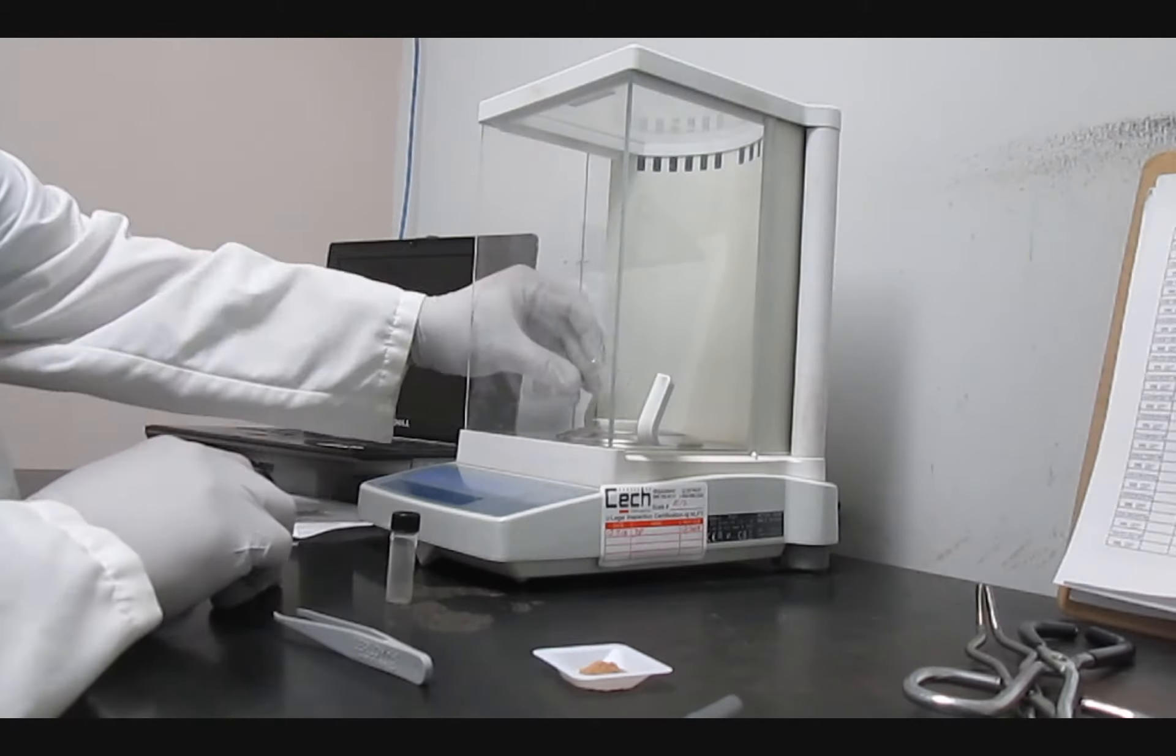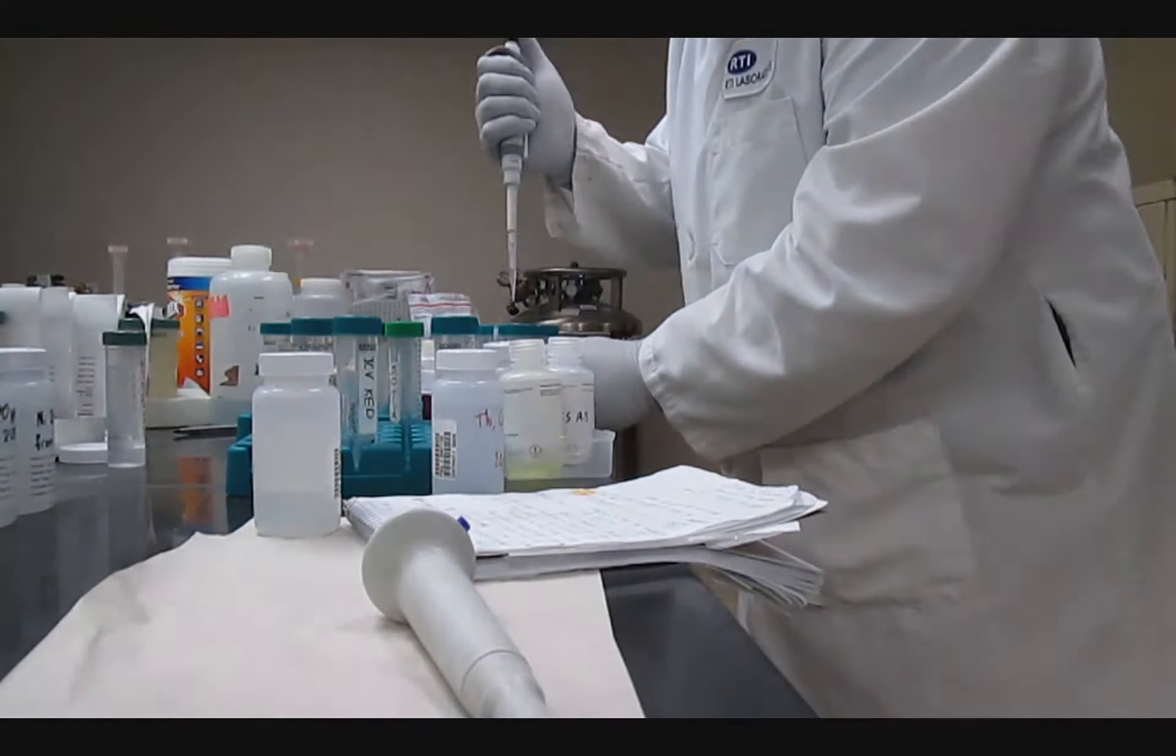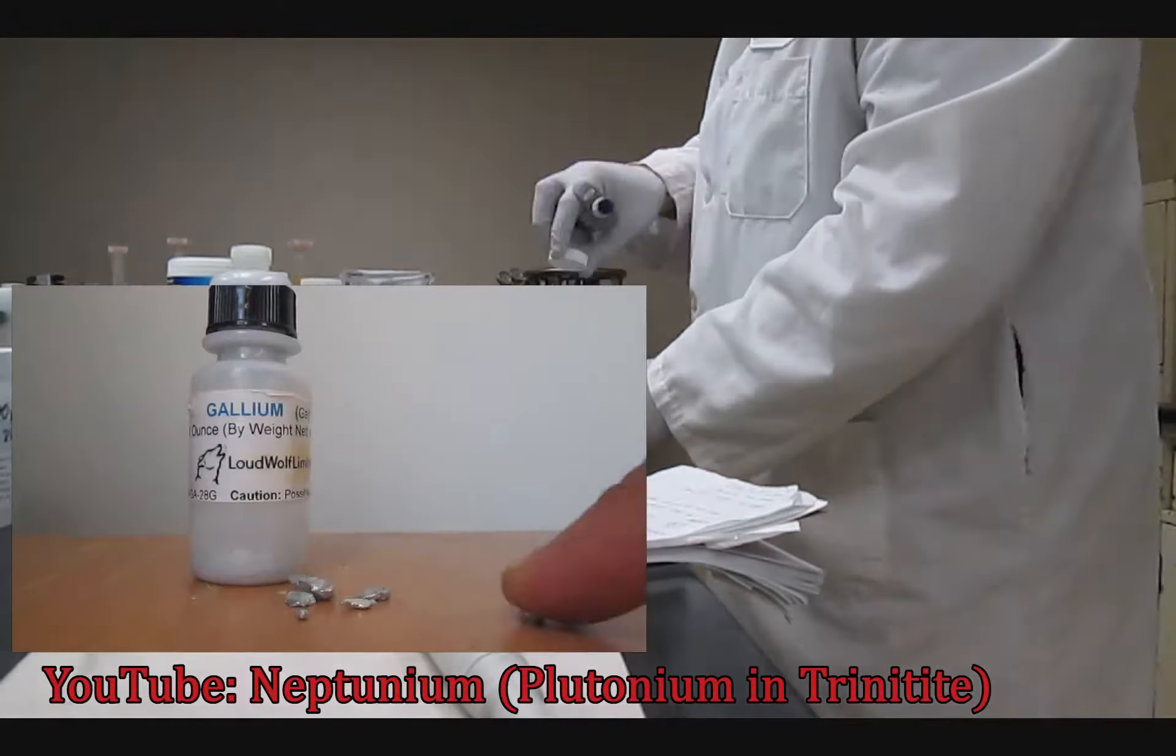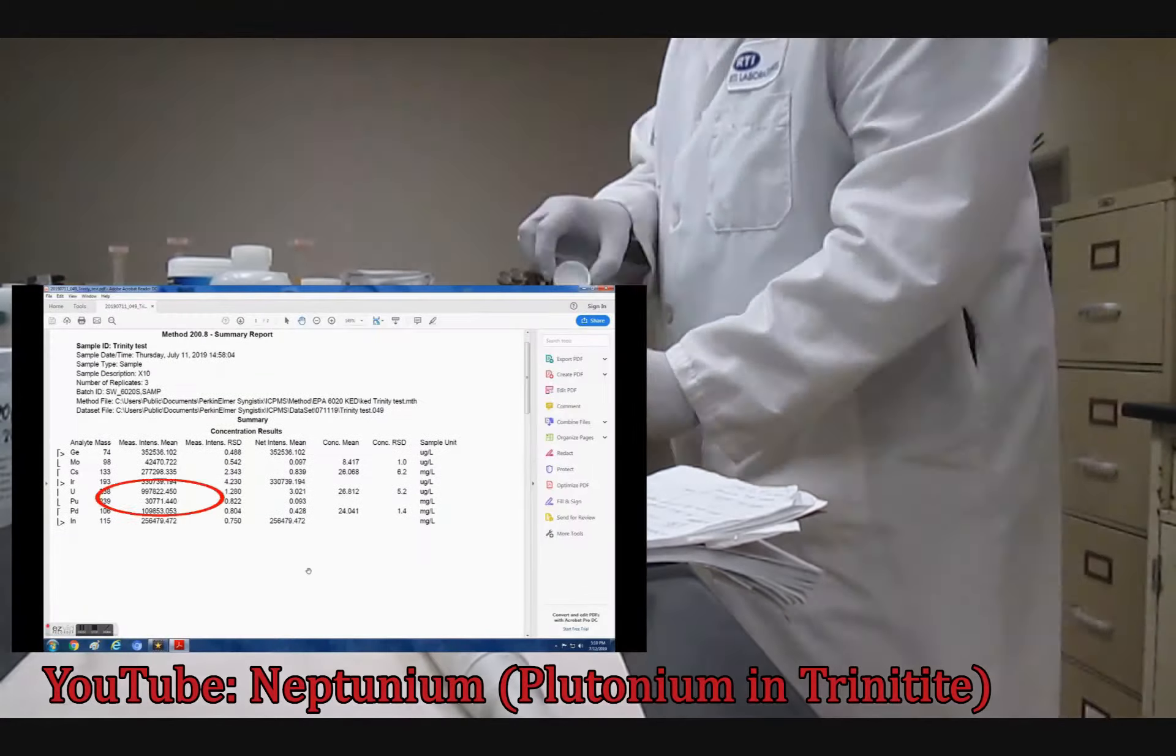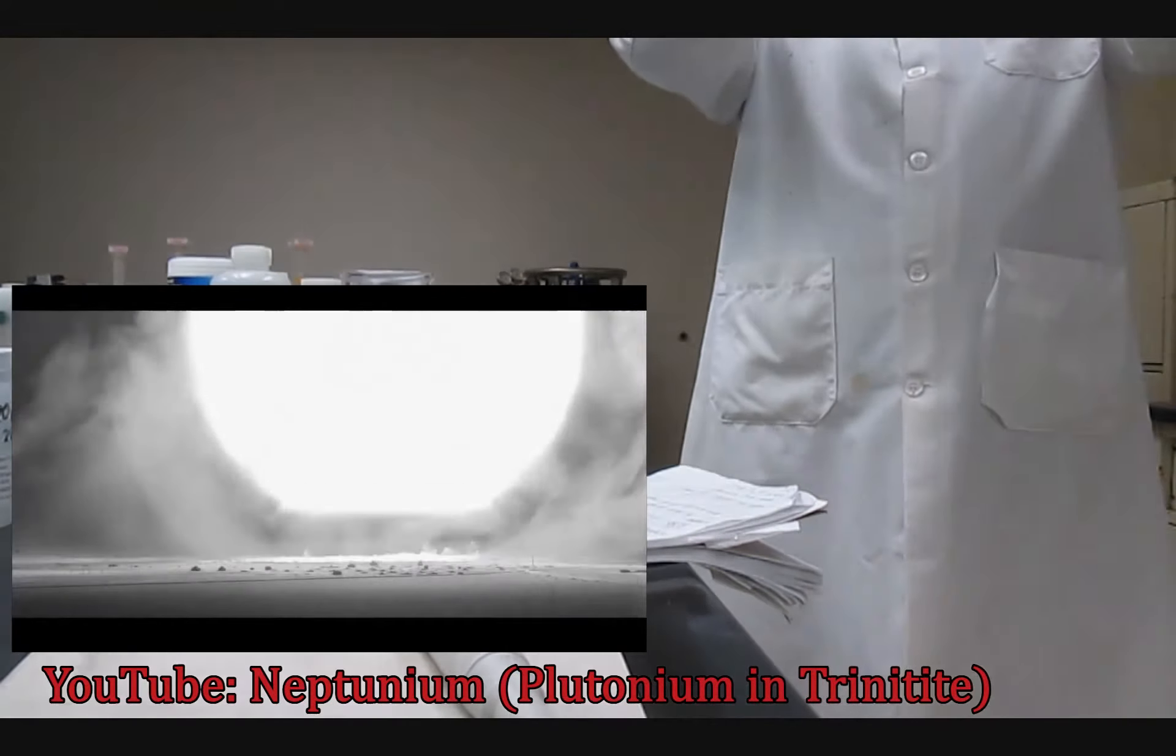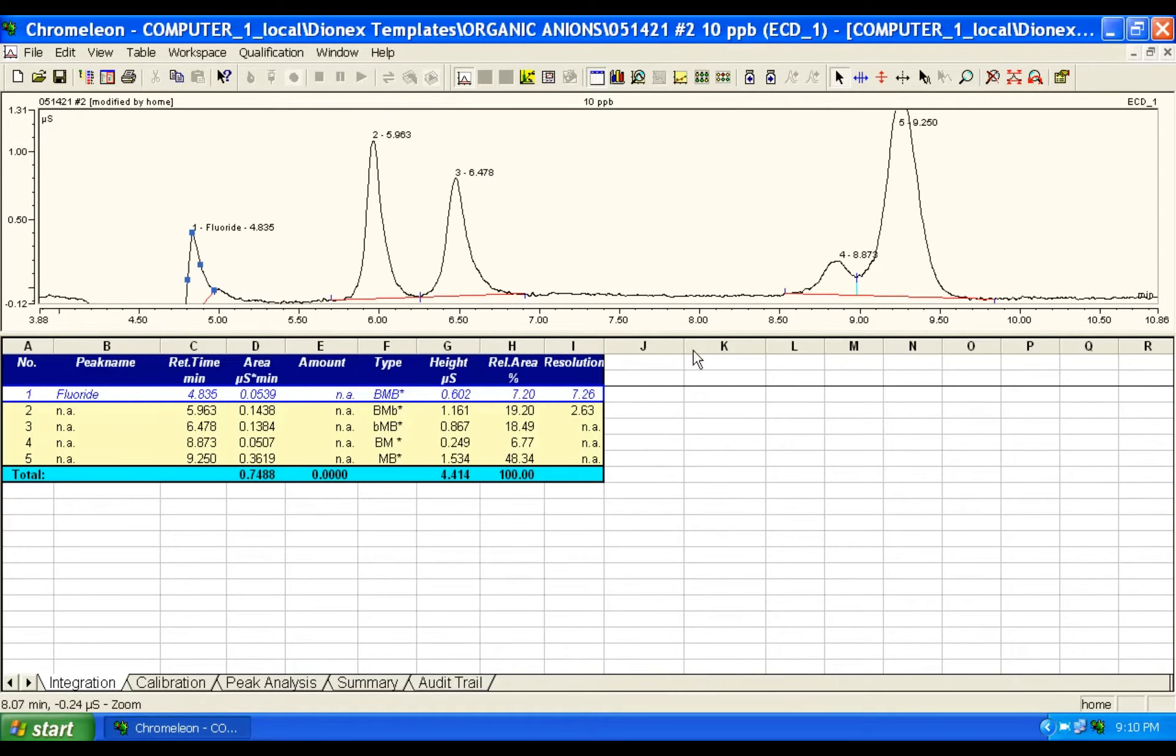And here lies one of the biggest problems in analytical chemistry. Some analytes behave the exact same way under similar conditions, but are actually completely different. Similar problem with the mass spectrometer and the isobaric interference between molybdenum isotopes and technetium in the plutonium and trinitite video. But I digress. There is something else I wanted to try, and I haven't talked about it yet.